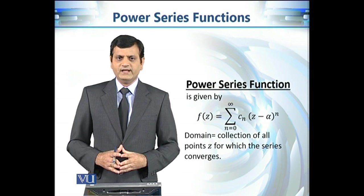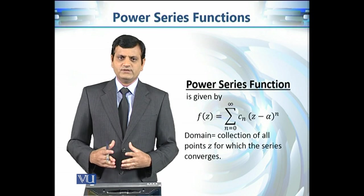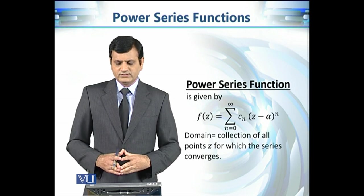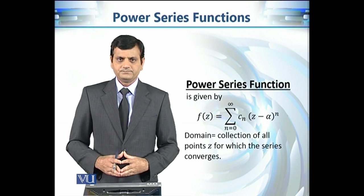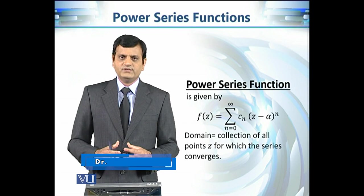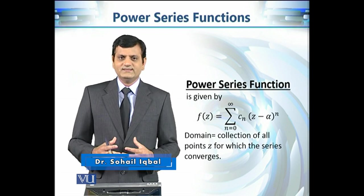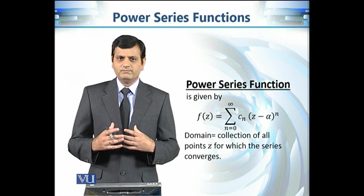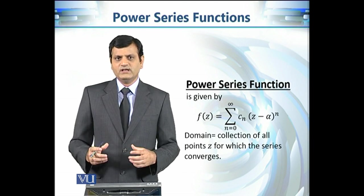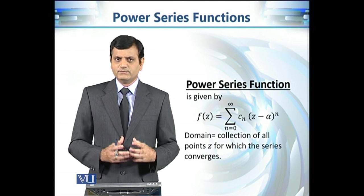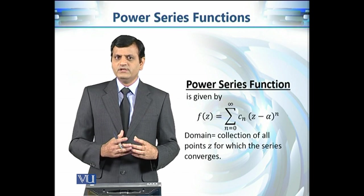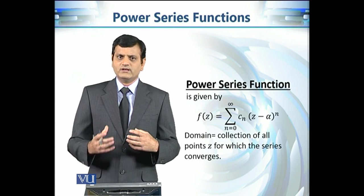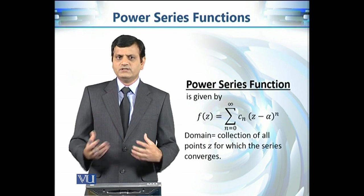Let's recall how we defined complex valued functions using infinite series. We consider this infinite series of the form C_n times (Z minus alpha) raised to power n. For some values of Z this infinite series will converge and for some values it will diverge. We want to find those complex numbers Z for which this infinite series converges, and those will be the domain of this complex valued function, because we don't want to include complex numbers for which the output is undefined or infinity.